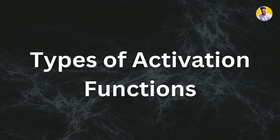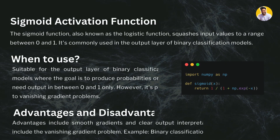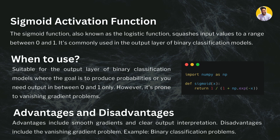The first activation function type is sigmoid, which you may have heard about in logistic regression. It squashes the input value to a range between 0 and 1, and is most commonly used in binary classification. We use it when we need the output layer to generate a binary classification. However, it is prone to the vanishing gradient problem — during backpropagation, gradients become so small that weights don't actually update.